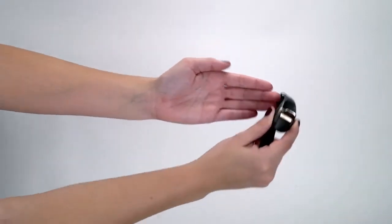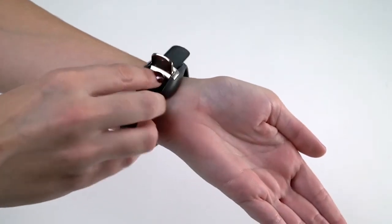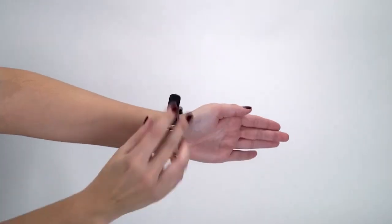Hold the Relief Band by the clasp and place the contact pads onto the gel you just added to the underside of your wrist. Then fasten the device snugly.